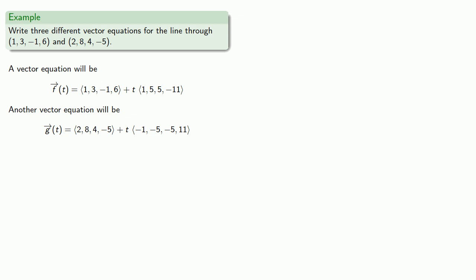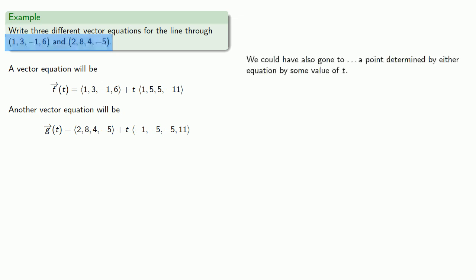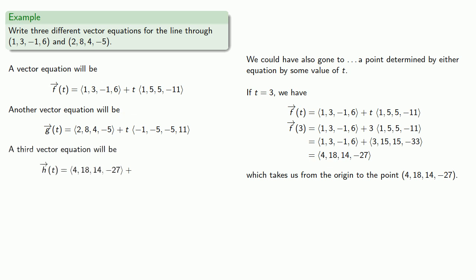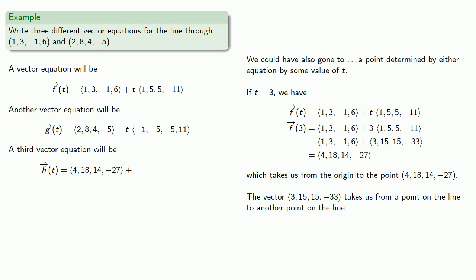How about a third equation? We always start by going to some point on the line, and we have two points — but we could also use a point determined by either equation for some value of t. For example, if t equals 3, our first equation gives us the point (4, 18, 14, -27). The vector (3, 15, 15, -33) takes us from that point to another point on the line, so our third vector equation goes any scalar multiple of this direction vector from (4, 18, 14, -27).